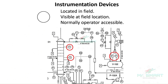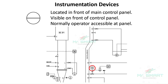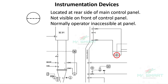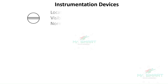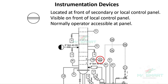The next important thing to know in P&IDs is the representation of instrumentation devices. Any instrumentation device mentioned inside a plain circle represents that the device is located in the field, visible at the field location, and can be normally accessed by the operator. Instruments mentioned inside a circle with a single horizontal continuous line represent that the device is located in the main control panel, visible only at the front side of the control panel, and can be normally accessed by the operator. Instruments mentioned inside a circle with a single horizontal dashed line represent that the device is located at the back side of the main control panel, not visible at the front side, and cannot be accessed by the operator normally. Instruments mentioned inside a circle with double horizontal continuous line represent that the device is located in the secondary or local control panel and can be normally accessed by the operator.